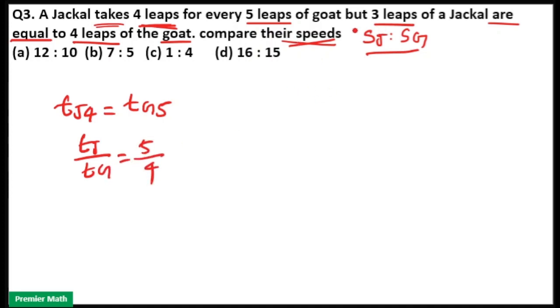Then in the next sentence, 3 leaps of Jackal are equal to 4 leaps of goat. That means 3 leaps of Jackal equal to 4 leaps of goat means distance is same.